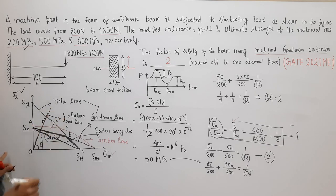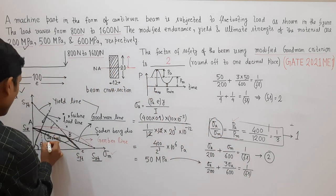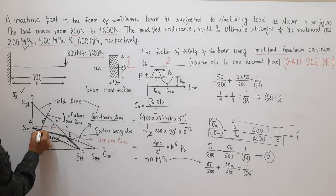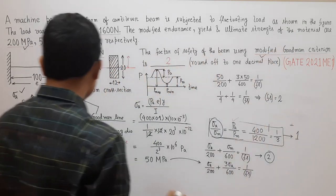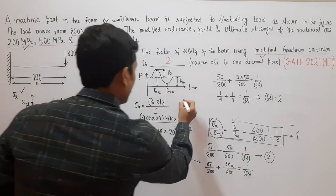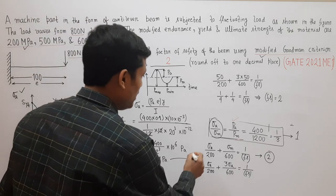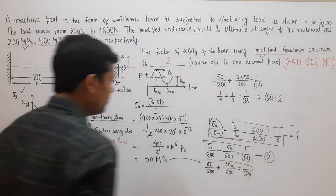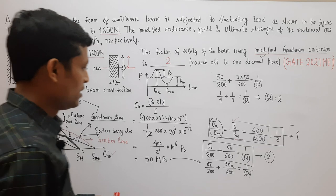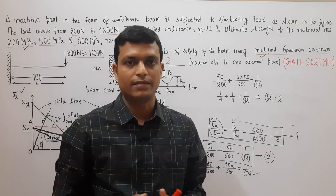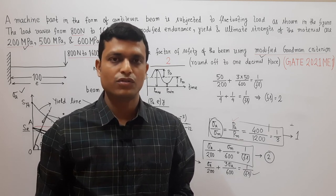Another diagram is the Soderberg diagram, formed by joining Se and S_YT. There is also the Gerber (parabolic) line joining these two points. If the criteria changes, the equation changes accordingly, and from the diagram you obtain the factor of safety. Thank you for watching this video; please subscribe to my channel to get new videos on mechanical engineering.